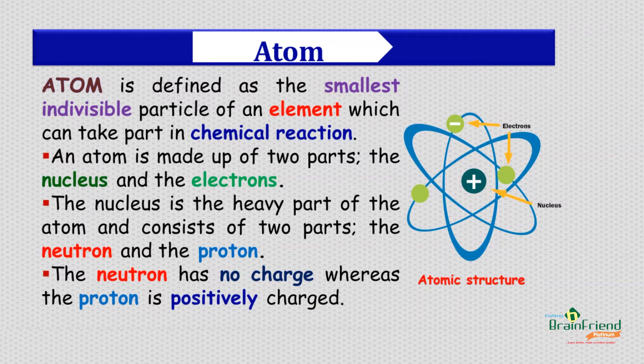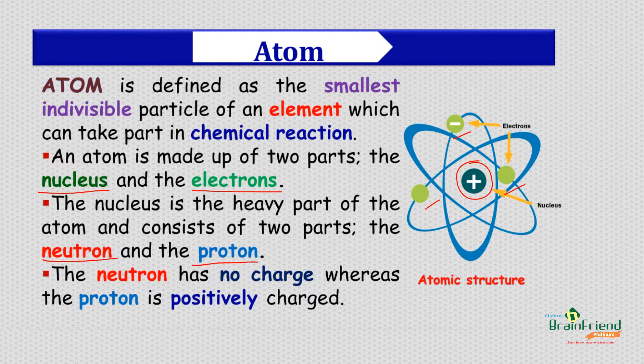Matter is made up of atoms. An atom is simply the smallest indivisible part of an element that can take part in a chemical reaction. An atom is made up of two parts basically: the nucleus and the electrons. The nucleus of an atom is found at the center of the atom, while electrons surround the nucleus. The nucleus is the heavy part of the atom and it consists of two parts: the neutron and the proton. Neutrons have no charge, while protons are positively charged.